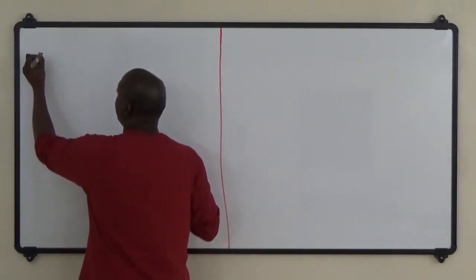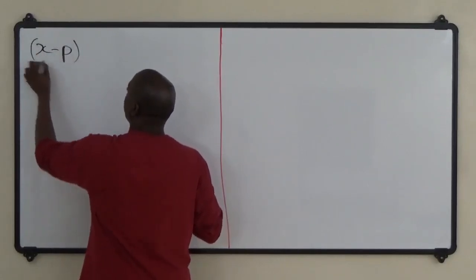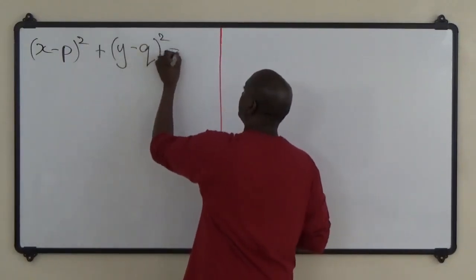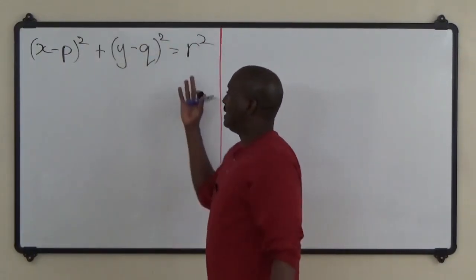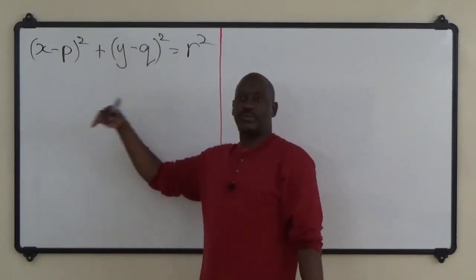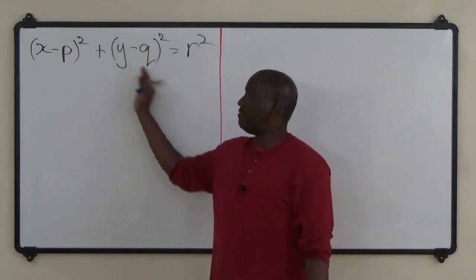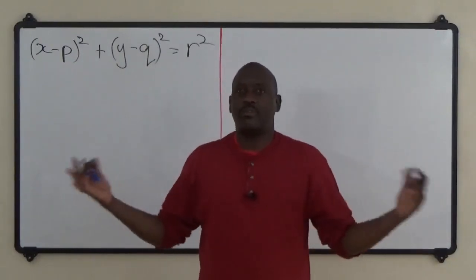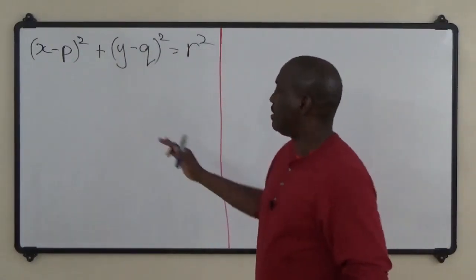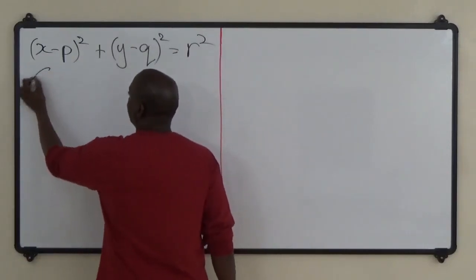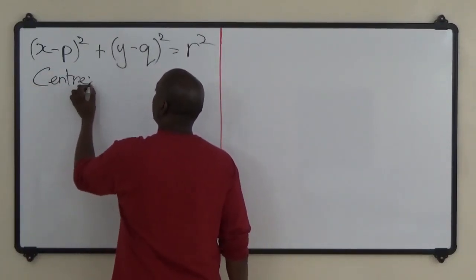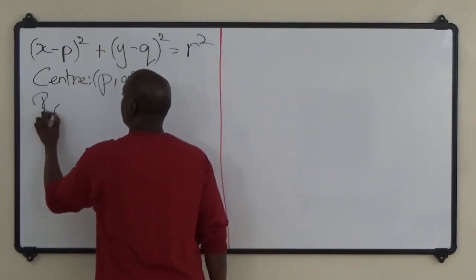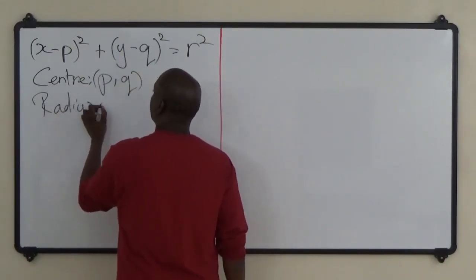For the record, the standard form of the equation of a circle is: (x − p)² + (y − q)² = r², where the center is (p, q) and the radius is r. Different books or exams may use different letters such as a and b, or f and g — it doesn't matter once you understand the concept.